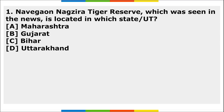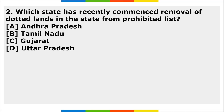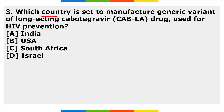Now let's move to the homework section. First: Navegaon-Nagzira Tiger Reserve, which was seen in the news, is located in which state? Second: which state has recently commenced the removal of dotted lands in the state from the prohibited list? Third: which country is set to manufacture a generic variant of the long-acting cabotegravir drug used for HIV prevention? These are your three homework questions.